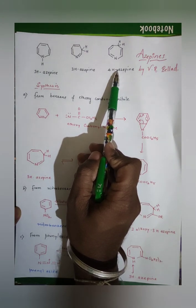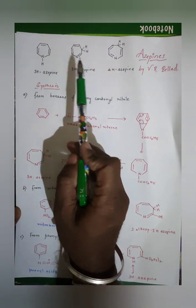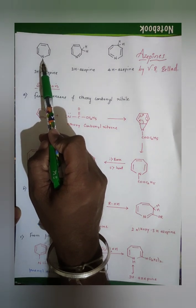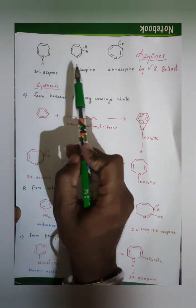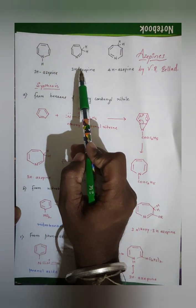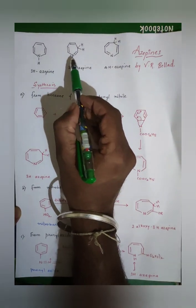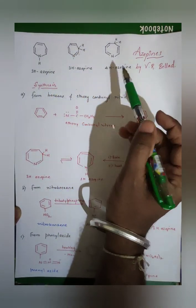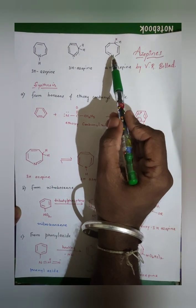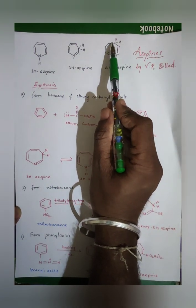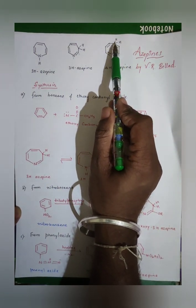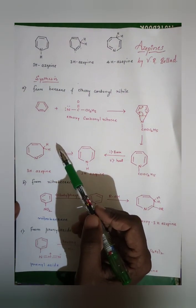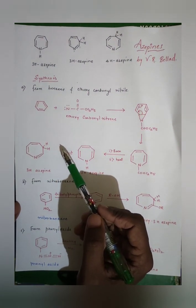In 1H-azepine, the hydrogen is on the nitrogen. In 3H-azepine, the hydrogens are present at the third carbon. In 4H-azepine, the hydrogen is present on the fourth carbon. Now we need to discuss the synthesis and reactions of azepines.